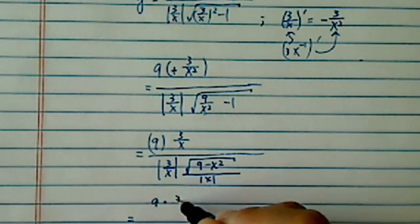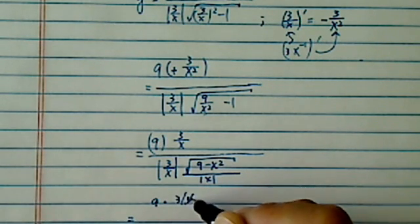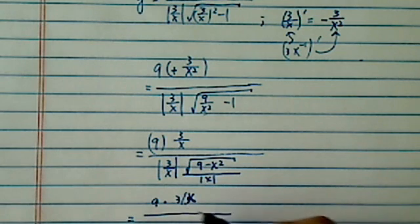Now I have 9 times 3 over x, divide by 3 over x, x squared, radical of 9 minus x squared.